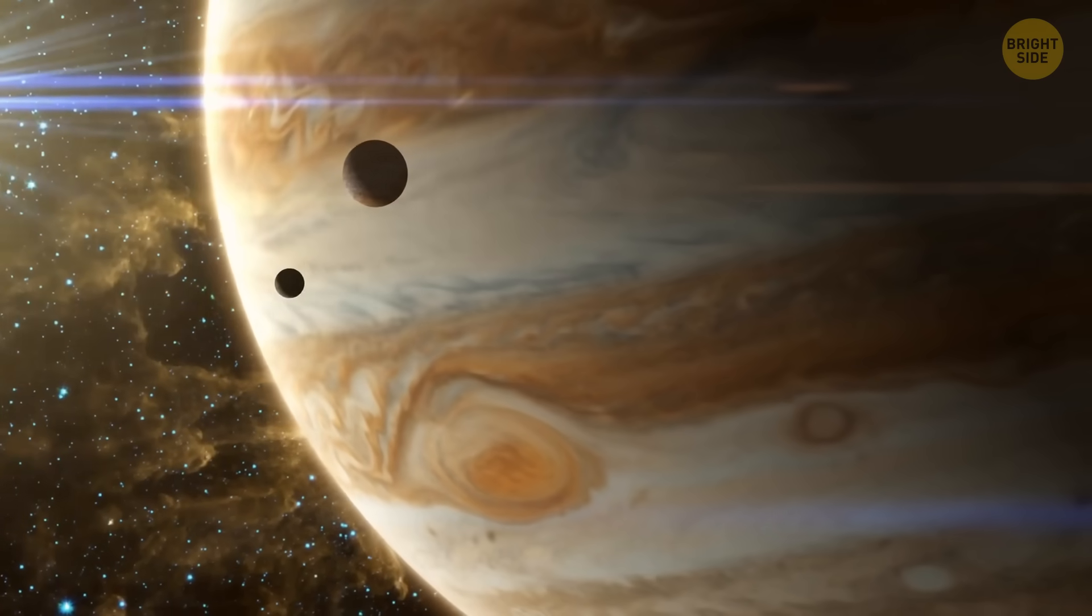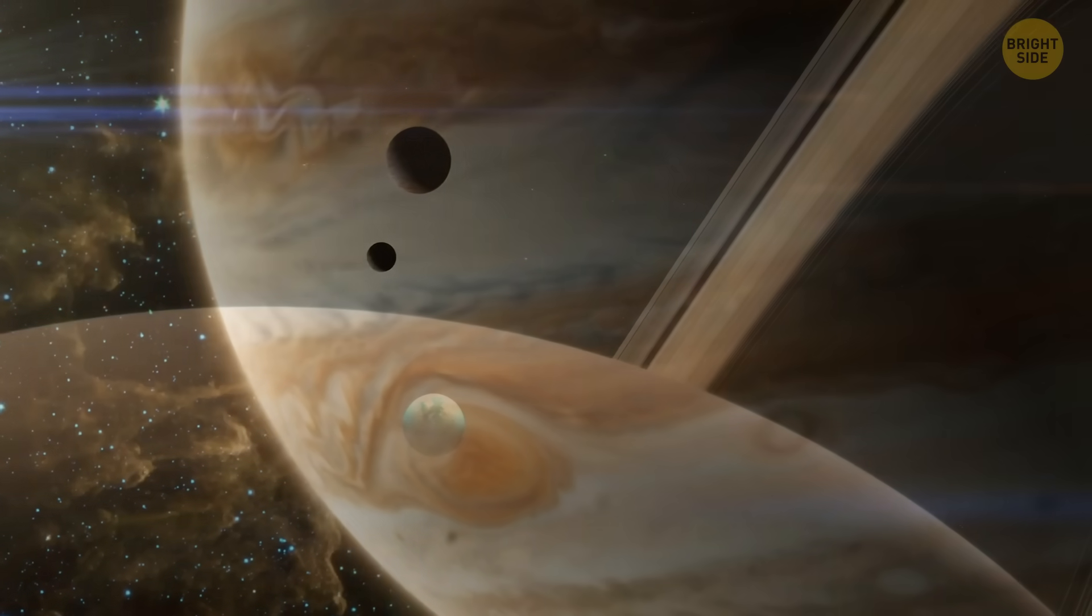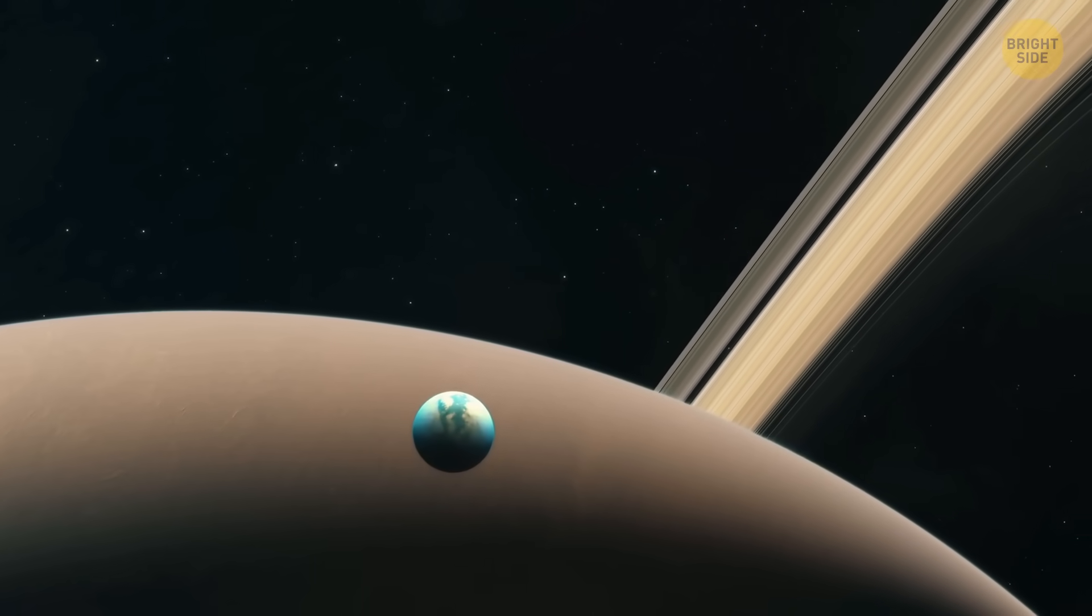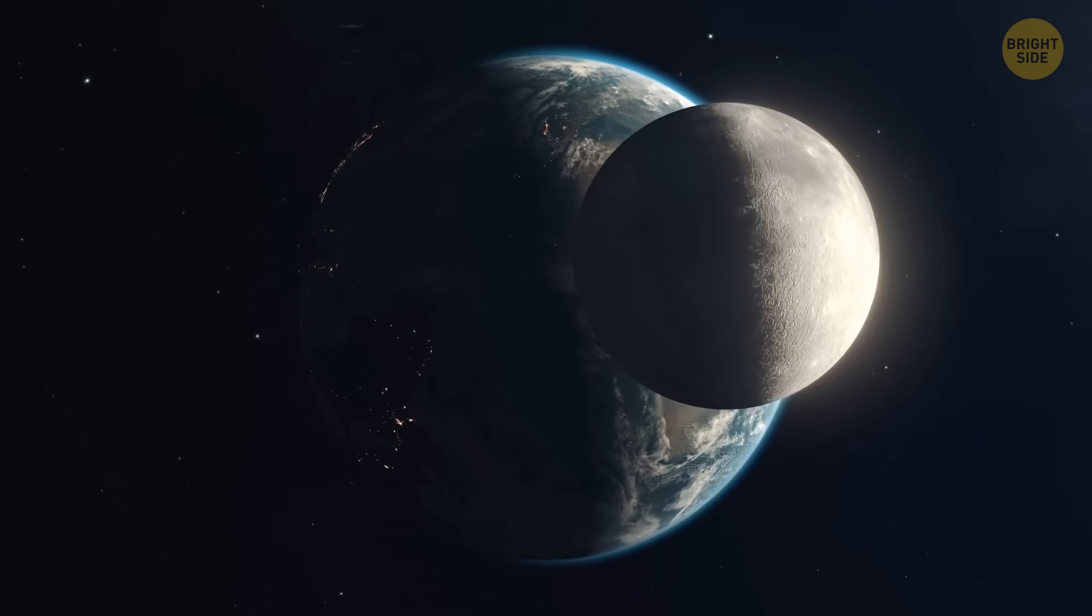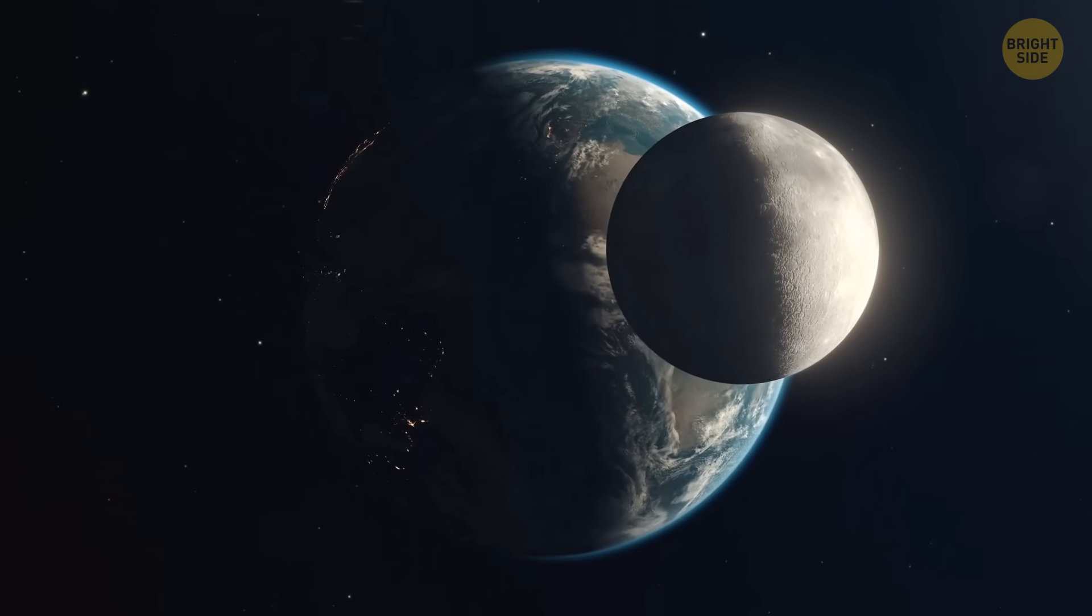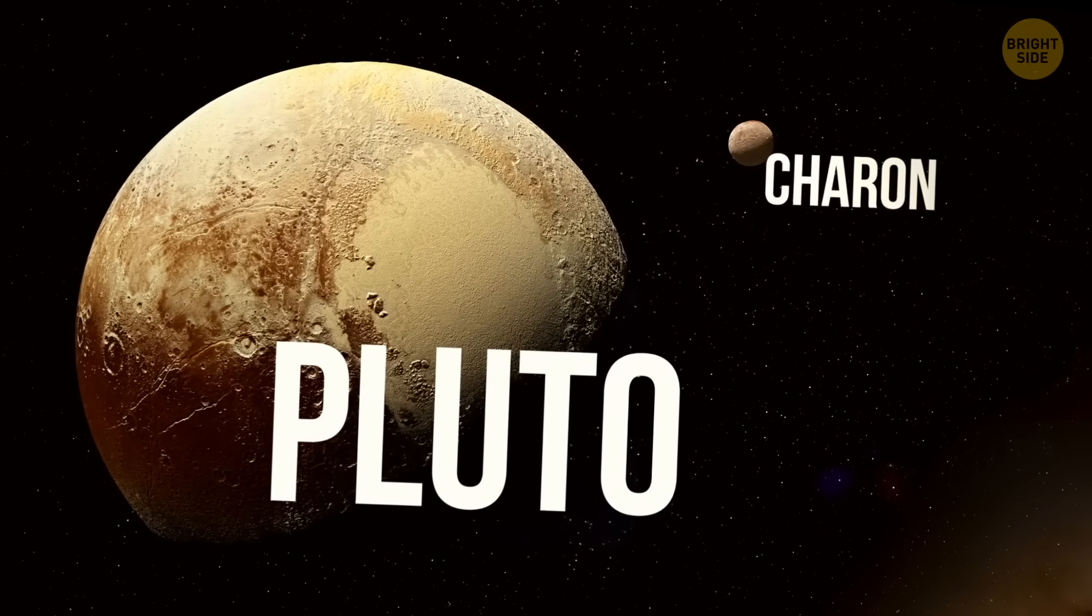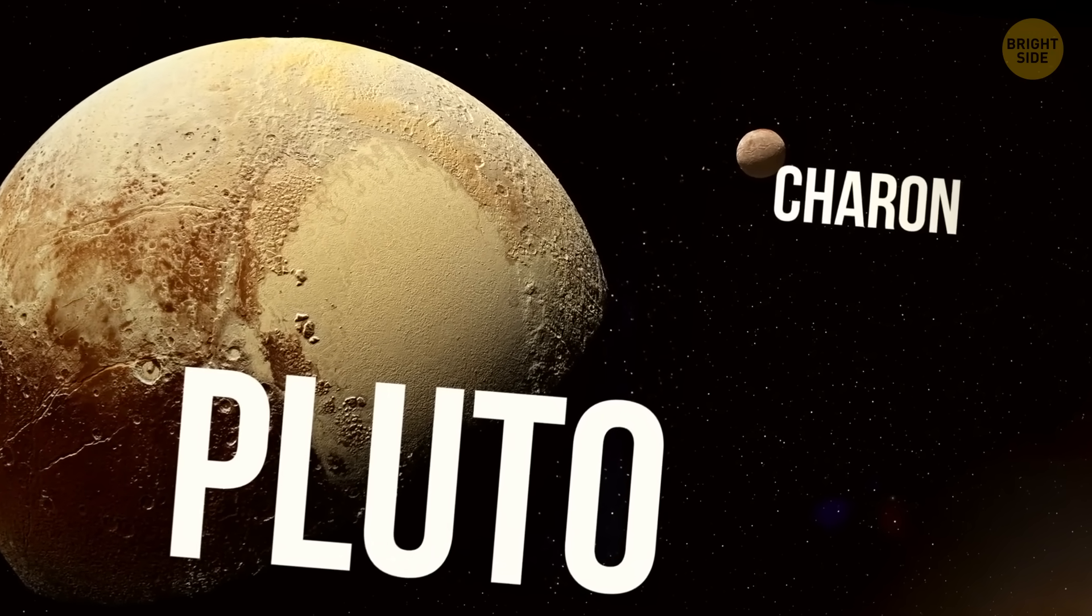Moons are all the rage in the outer solar system. In fact, almost every planet here has at least one moon, except for Mercury and Venus. Earth has just one, which is kind of sad if you think about it. Even non-planetary bodies like Pluto have at least a couple of moons. A bit unfair, isn't it?